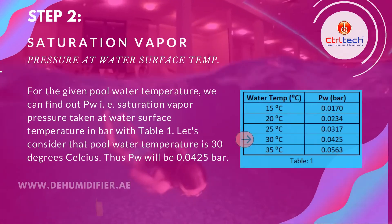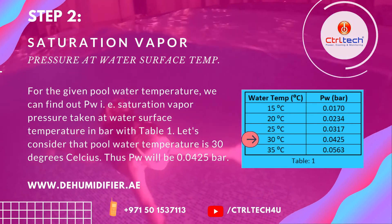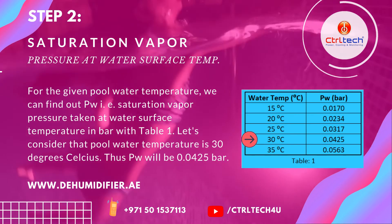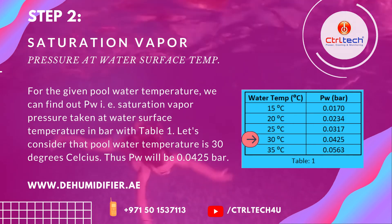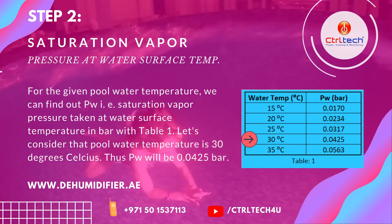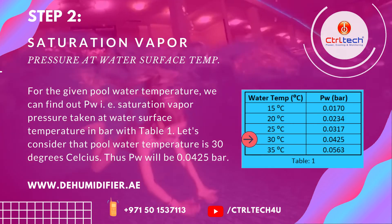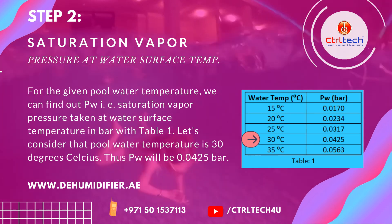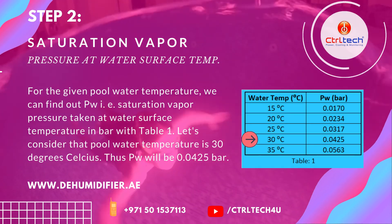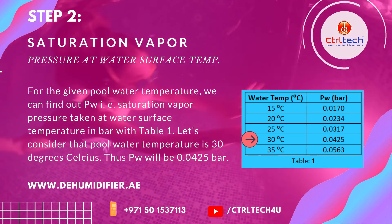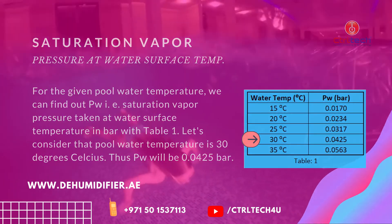Now let's find out PW. For the given pool water temperature, we can find out PW, i.e. saturation vapor pressure taken at water surface temperature in bar, using Table 1. Let's consider that the pool water temperature is 30 degrees Celsius. Thus PW will be 0.0425 bar.